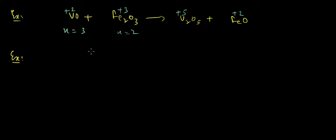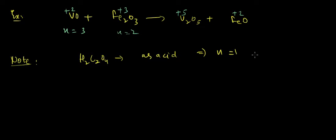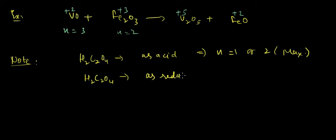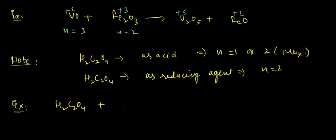Now, for H2C2O4: if we treat it as an acid, then n-factor can be 1 or 2, with 2 being the maximum. If H2C2O4 is considered as a reducing agent, then n-factor would be 2. H2C2O4 combining with an oxidizing agent forms CO2, so the n-factor would be 2.